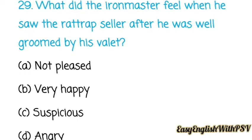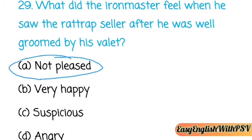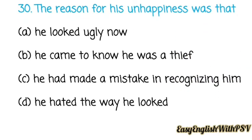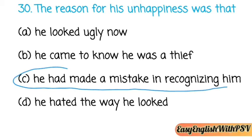Question number twenty-nine: What did the iron master feel when he saw the rat trap seller after he was well groomed by his valet — not pleased, very happy, suspicious, or angry? He was not pleased. He wanted to give him to the sheriff. Question number thirty: The reason for his unhappiness was that he had made a mistake in recognizing him.